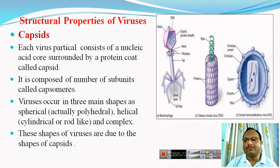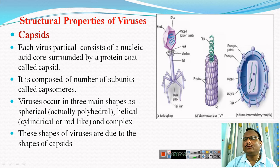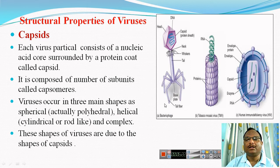The capsomere subunits are arranged in a specific manner, giving viruses three different shapes. In spherical viruses, the arrangement of capsomeres makes the capsid spherical. In rod-shaped viruses, capsomeres are arranged around single-stranded RNA molecules, making the virus rod-shaped — meaning its width is less and its length is more. In complex viruses, the structure is neither spherical nor rod-shaped but complex; they may contain a head region that is somewhat icosahedral and a tail region that is somewhat rod-shaped.